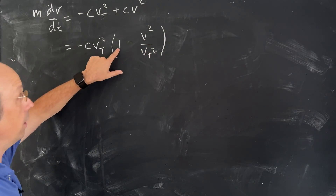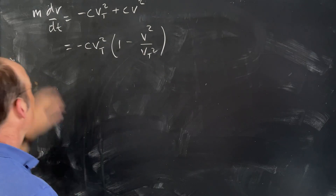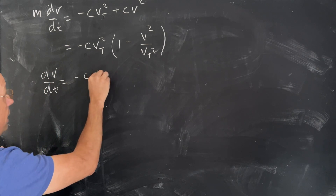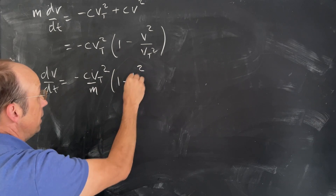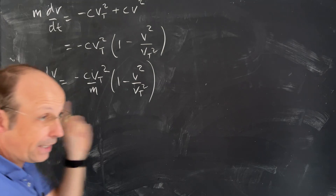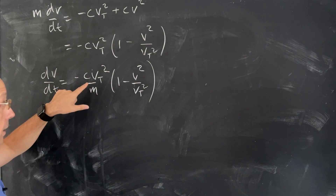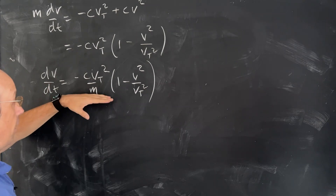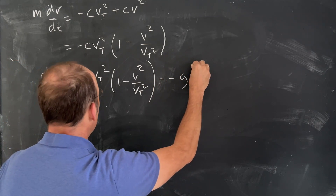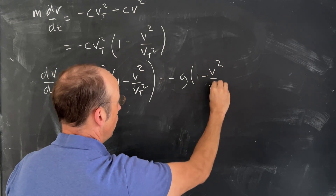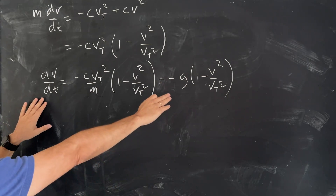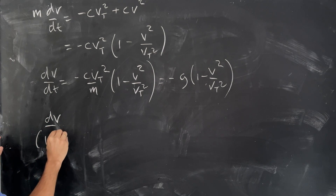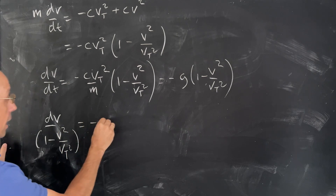If I multiply that in, I get negative cv_t squared, and over here I get plus cv squared — that's what I want. Now I'm going to divide both sides by the mass. dv/dt equals negative cv_t squared over m, times (1 minus v squared over v_t squared). Remember, we defined terminal velocity as mg equals cv_t squared, so cv_t squared over m is actually just g. So it's equal to negative g times (1 minus v squared over v_t squared). I can separate the variables — all the v's on one side, all the t's on the other side — so I get dv over (1 minus v squared over v_t squared) equals negative g dt.